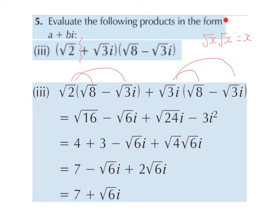A general rule of roots to learn — it's not given in the formula log tables in the exam — is root x multiplied by root x gives x. For example, root 2 multiplied by root 2 gives 2; root 3 multiplied by root 3 gives 3, which is what we had here; root 4 multiplied by root 4 gives 4, and so on. We should learn this off by heart.